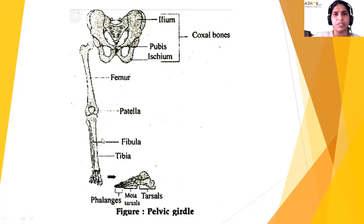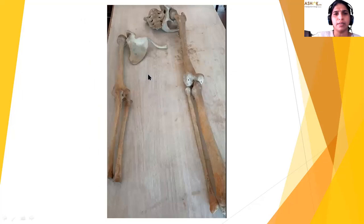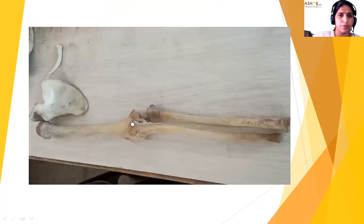The femur joins the pelvic girdle at the acetabulum cavity, forming a ball and socket joint. The tibia and fibula are bones of the hind limbs — tibia is larger than the fibula. Tarsals and metatarsals are also present. In summary, the pelvic girdle is formed by ilium, ischium, and pubis; the hind limb bones are the femur, tibia, fibula, and patella. In the lab, bone specimens include radius, ulna, humerus, scapula, clavicle, sacrum, femur, ilium, ischium, and pubis.